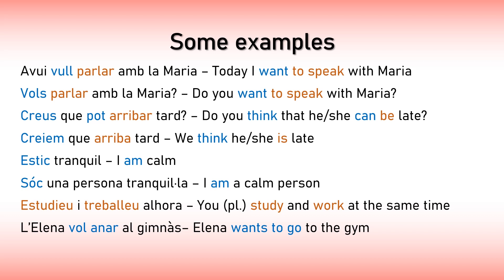Do you want to speak with Maria? In this case it's conjugated in the second person: 'Vols parlar amb la Maria?' See that the conjugation is quite different because it is an irregular verb. 'Creus que pot arribar tard?' — Do you think that he or she can be late? 'Creus' is from the verb creure (to think or believe), and 'pot' is from the verb poder (to be able to), which is also irregular.